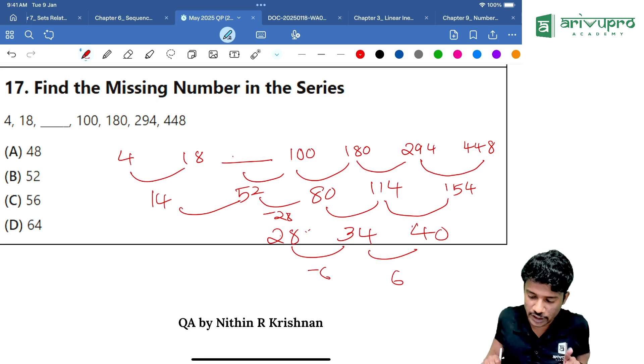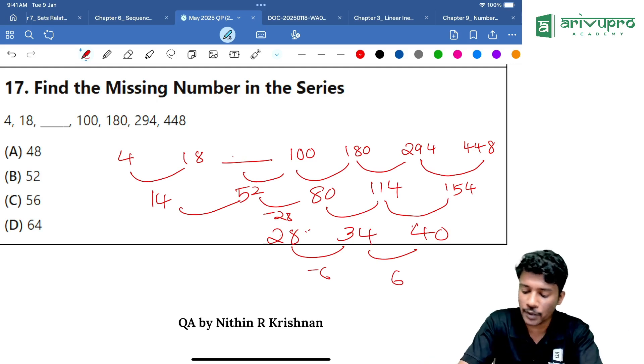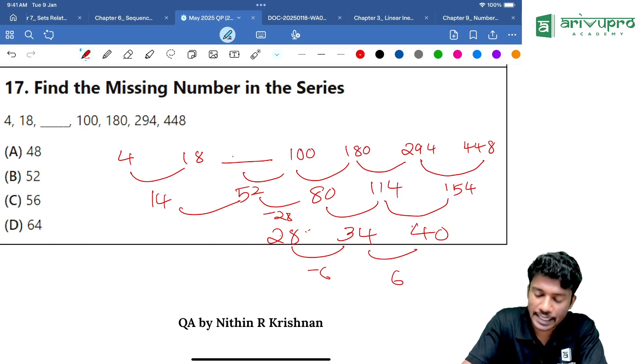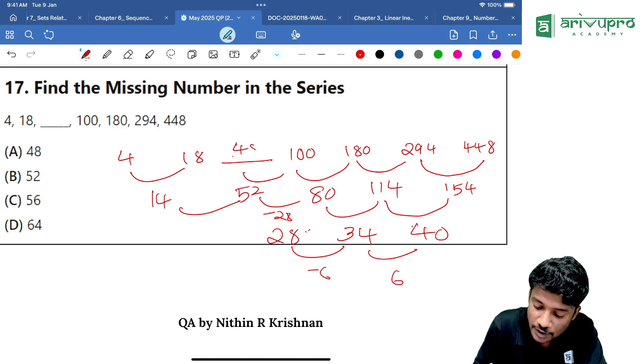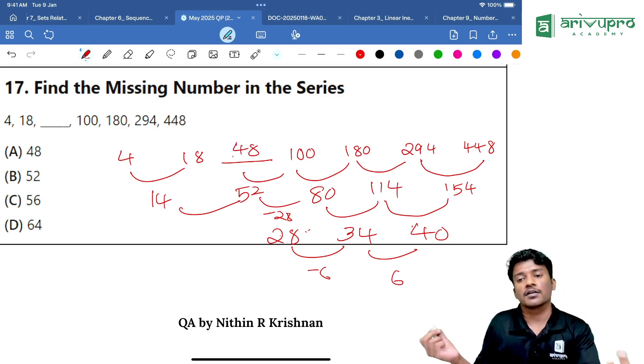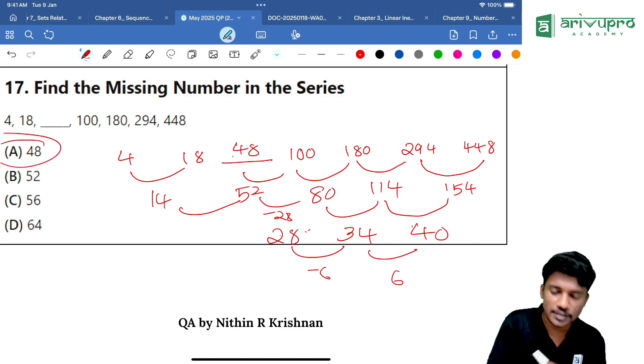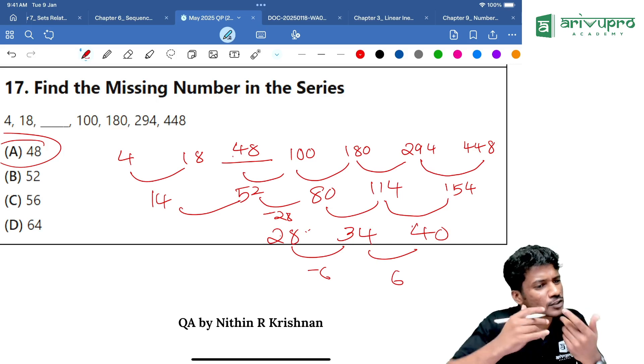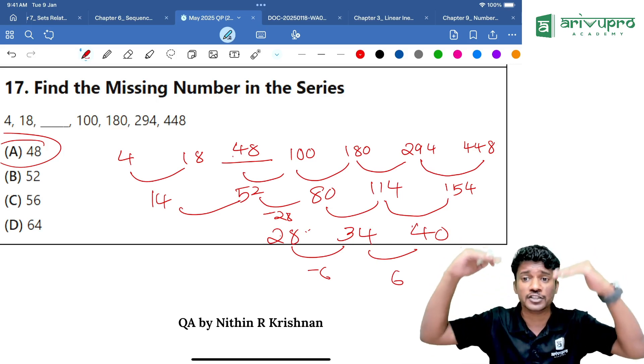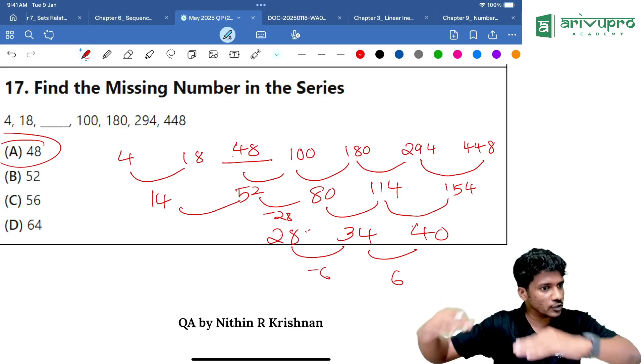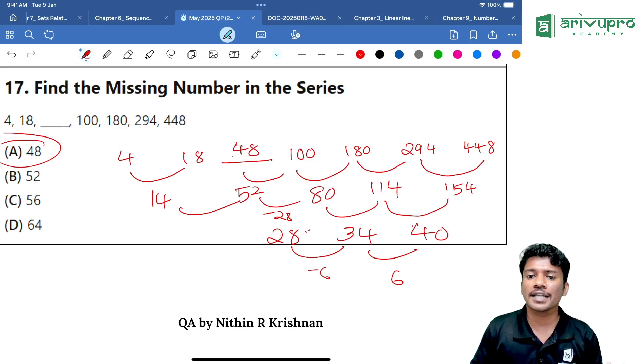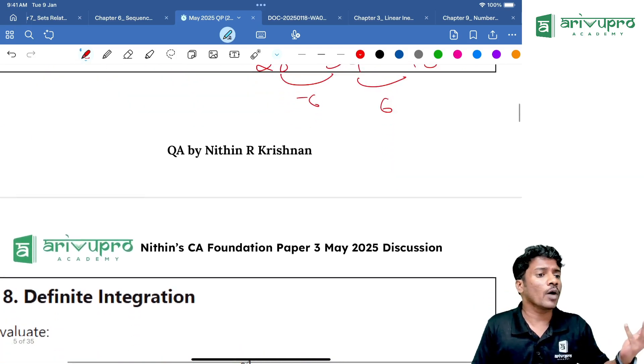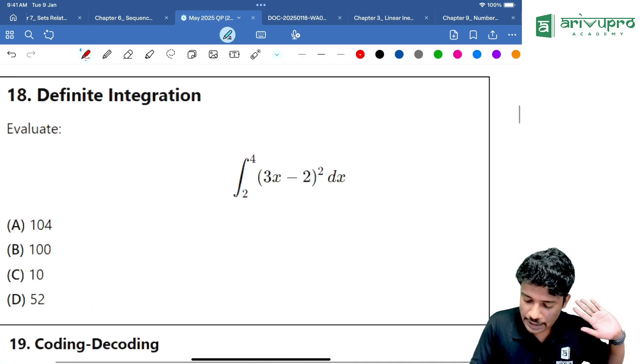My question is what will be this number over here? Difference is 14, 52, then 80, then 114, then 154. What is the next number? 48. Why is it 48? 100 minus 52 is 48. Answer is option A. Just go for the common difference all the time. If you are not getting for the second line, go for the third line. If not, go for the fourth line. If too many numbers are there, one pattern will automatically be there.